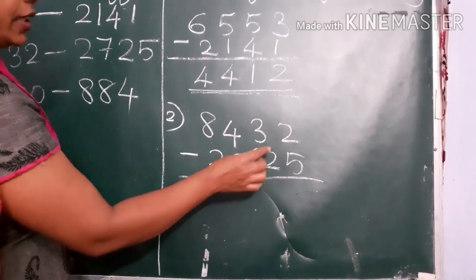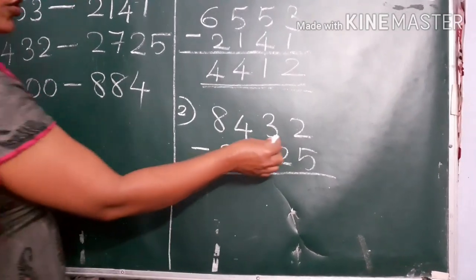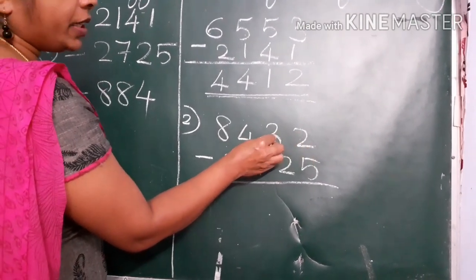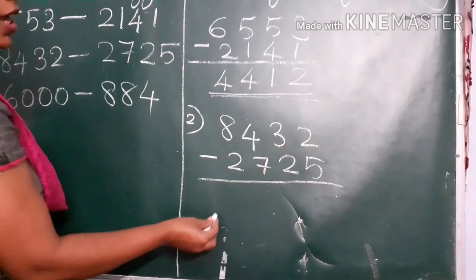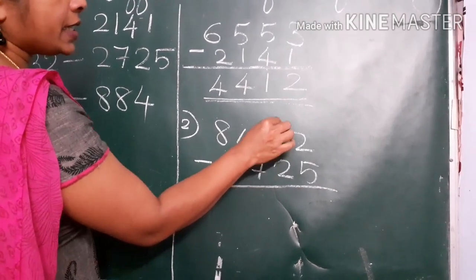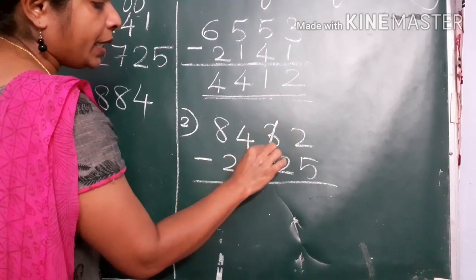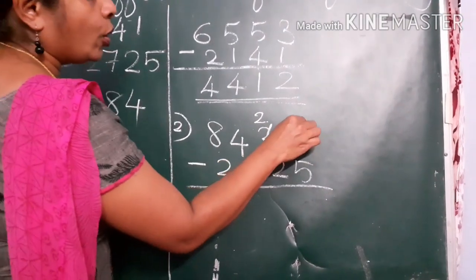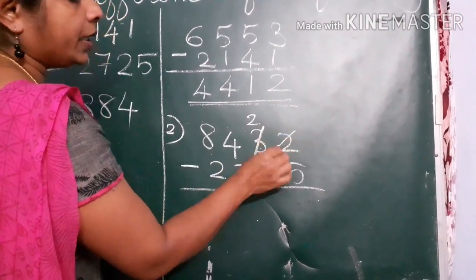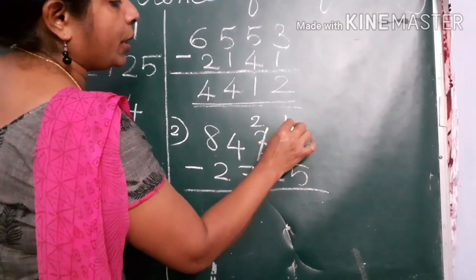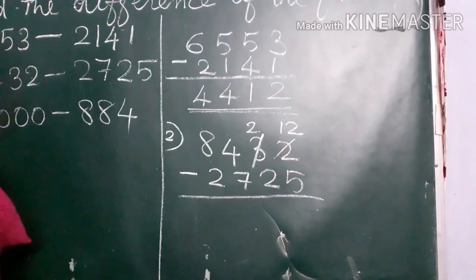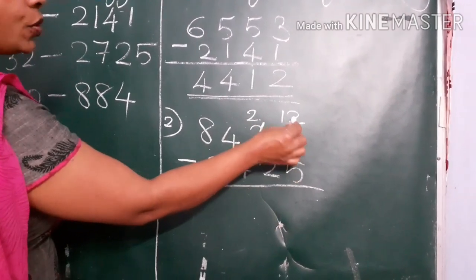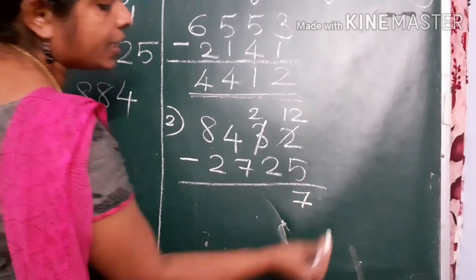In that case, what to do? We will borrow from the nearest place. This is the ones place number — it can borrow from the nearest place, the tens place. When we borrow a number from the tens place, that number will become reduced by 1. So 3 will become 2, and the borrowing number — we will add 10. That means 10 plus 2 will become 12. Now we can subtract: 12 minus 5, the answer is 7.